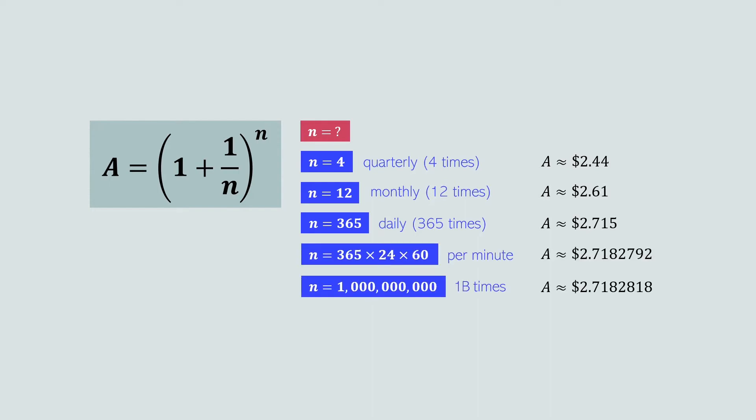Although the values of N increased dramatically, the final account balance increased by very, very little. The more times we compound our interest within a year, the larger our bank account balance can grow, but there is a limit to this growth. Our bank account balance approaches a maximum value, and this value is Euler's number.